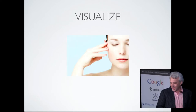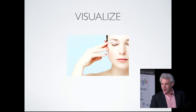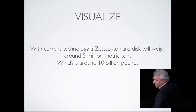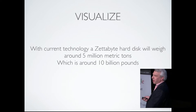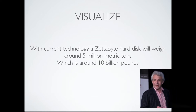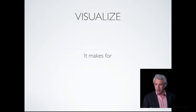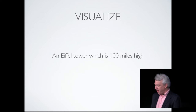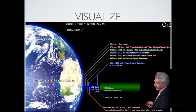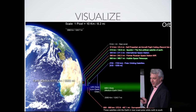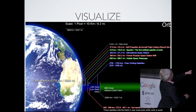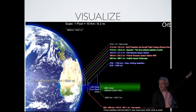So how much is a zettabyte? Let's visualize. With current technology, a zettabyte hard disk will weigh around 5 million tons, or about 10 billion pounds. It makes for an Eiffel Tower which is 100 miles high. But you're in orbit.